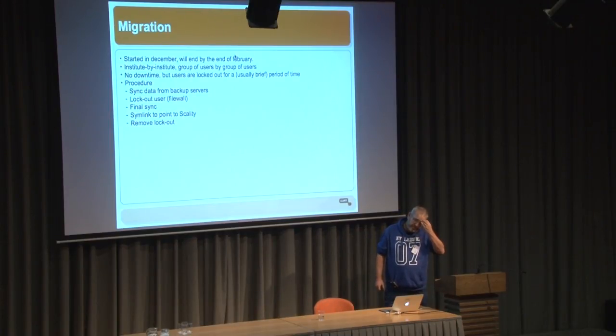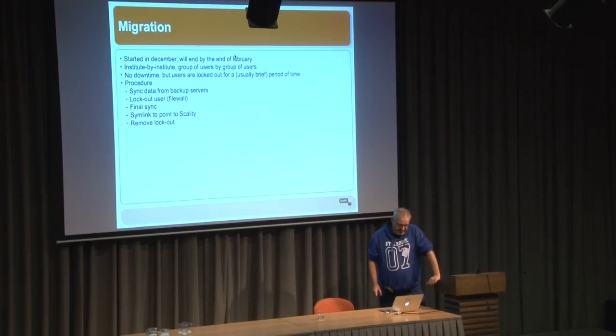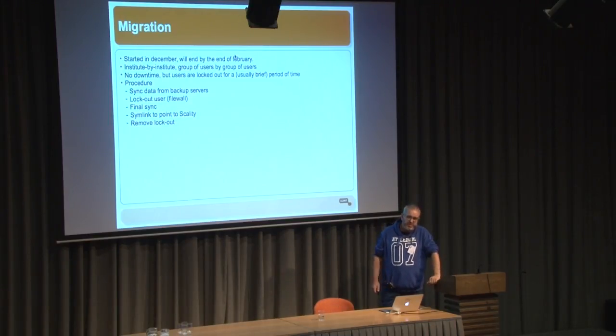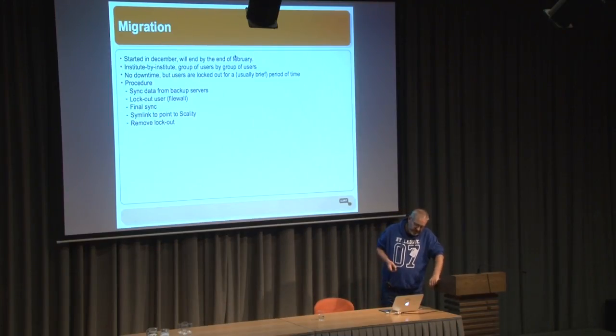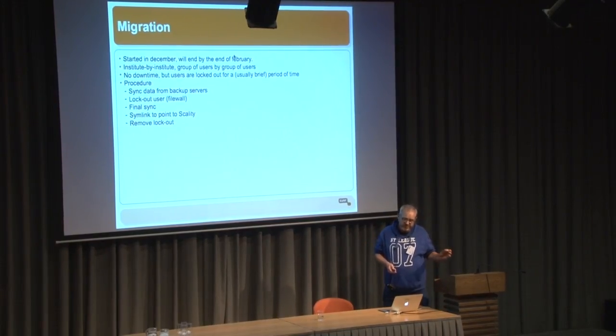The migration required a lot of preparation, and we are already in the middle of this process. Everything is running quite smoothly. We started in December and expect to finish by end of February. We're going institute by institute, group of users by group of users, with no downtime — users are locked out only briefly, for most users on the order of seconds, though some may take hours. The procedure is: we sync data from our backup service to Scality, then when ready we lock out the user using the firewall mechanism briefly, do the final sync, put a symlink in Scality pointing to the new data directory, then remove the lockout and the user can access their data again. This works perfectly fine.